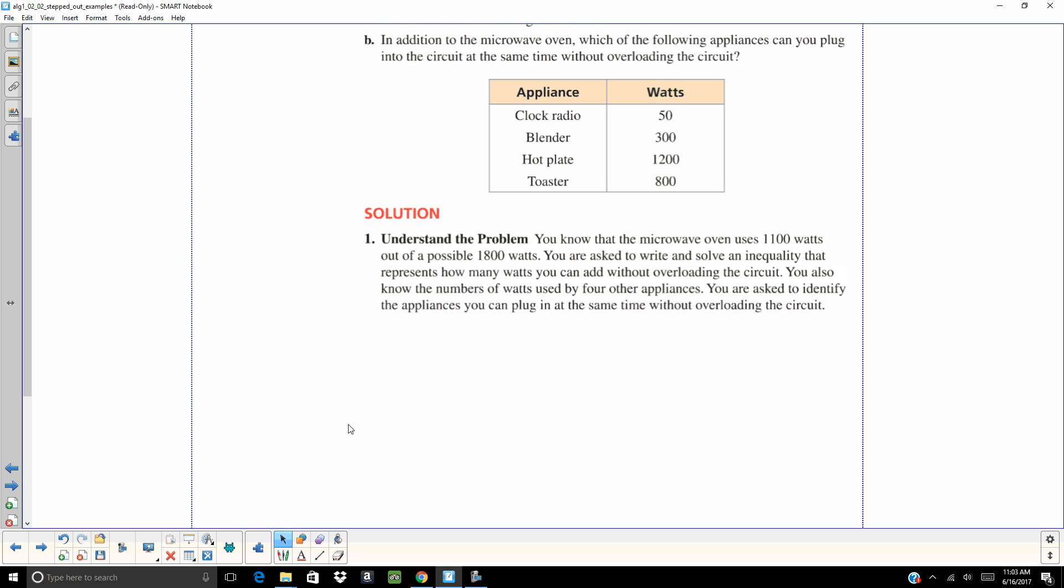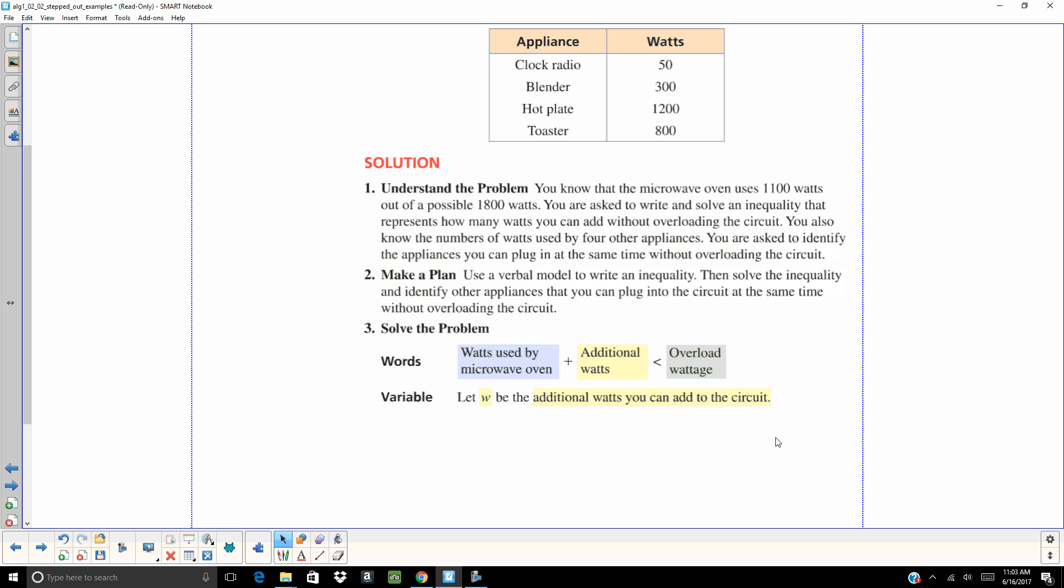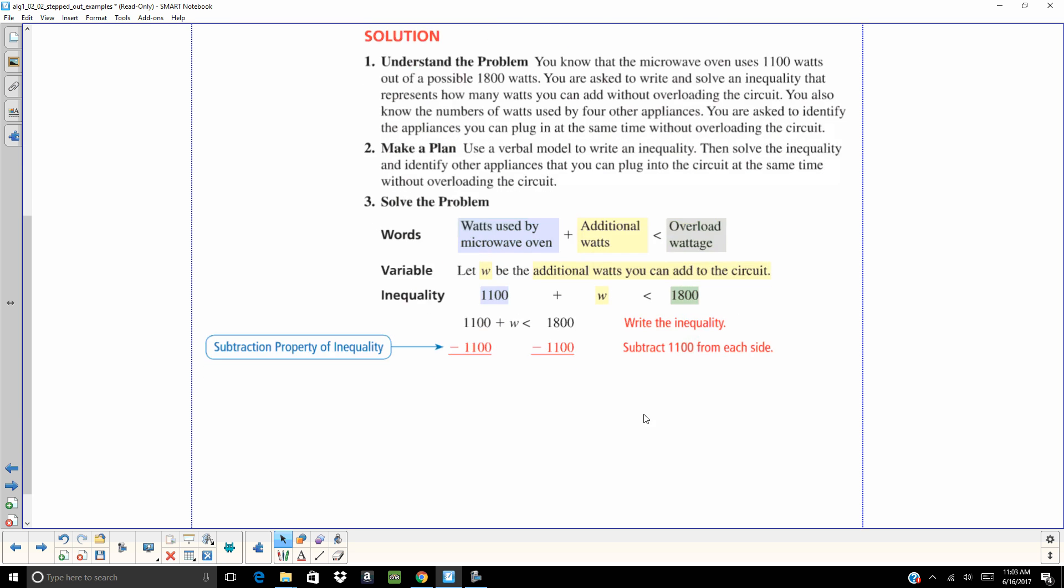So our plan is we're going to have to write an inequality and then we will solve that inequality. So the watts used by the microwave plus additional watts has to be less than the overload wattage. So 1100 plus w has to be less than 1800. Subtract 1100. w has to be less than 700, so we can't use more than 700 watts.